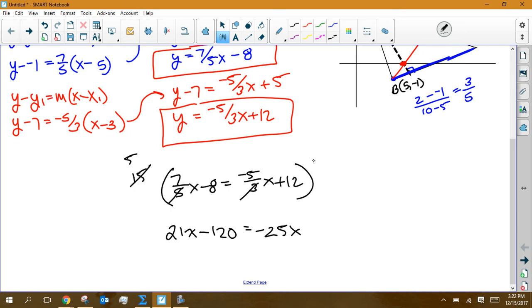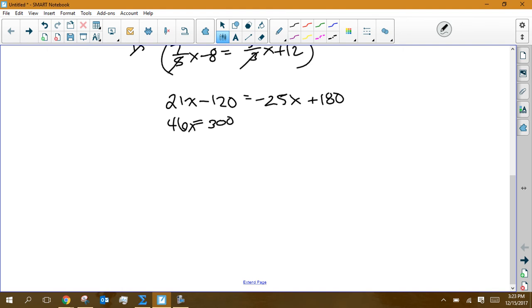And now 15 times 12. Well, 15 times 10 would be 150. But now this is 30 extra, so plus 180. Now I'm going to add 25 to both sides, so I get 46 here. Add 120 to both sides, so I get 300. So 46x equals 300.